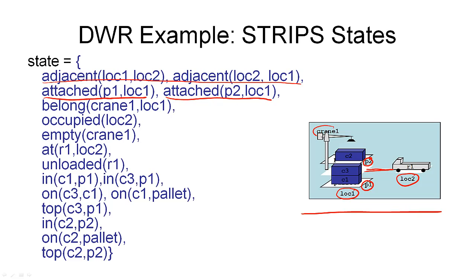And then we have one crane denoted by the symbol crane one. And again, we write down that the crane one belongs to location one. So, this defines the topology of the domain.